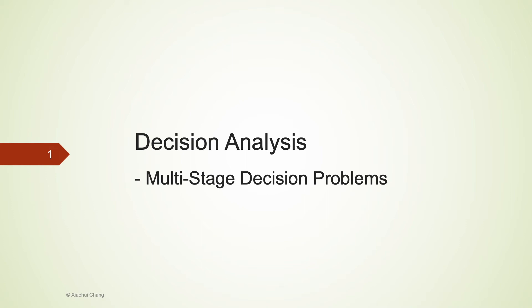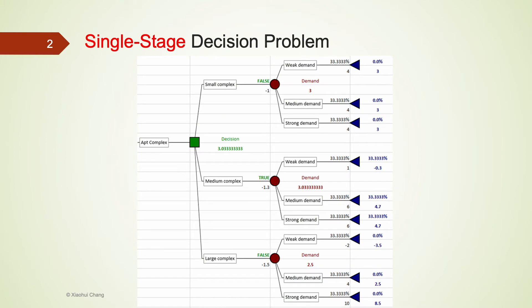This video discusses multi-stage decision problems. The introductory example we have considered is a single-stage decision problem, as the company only needs to make one decision: what size of apartment complex they should build.